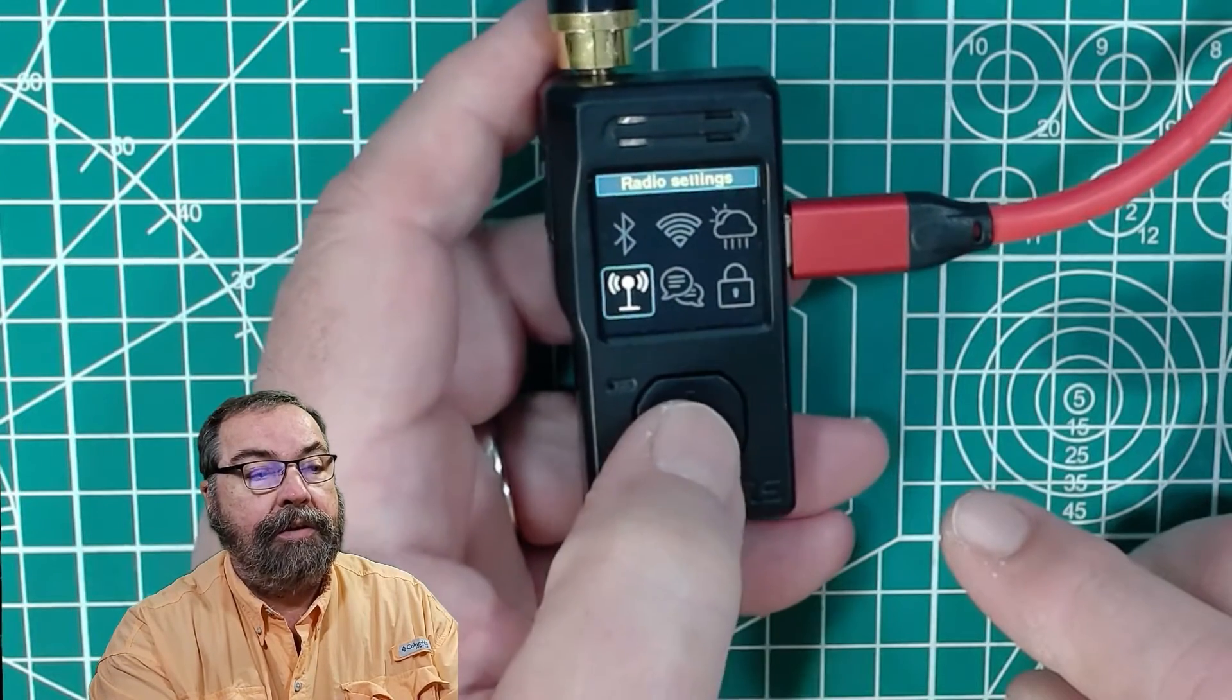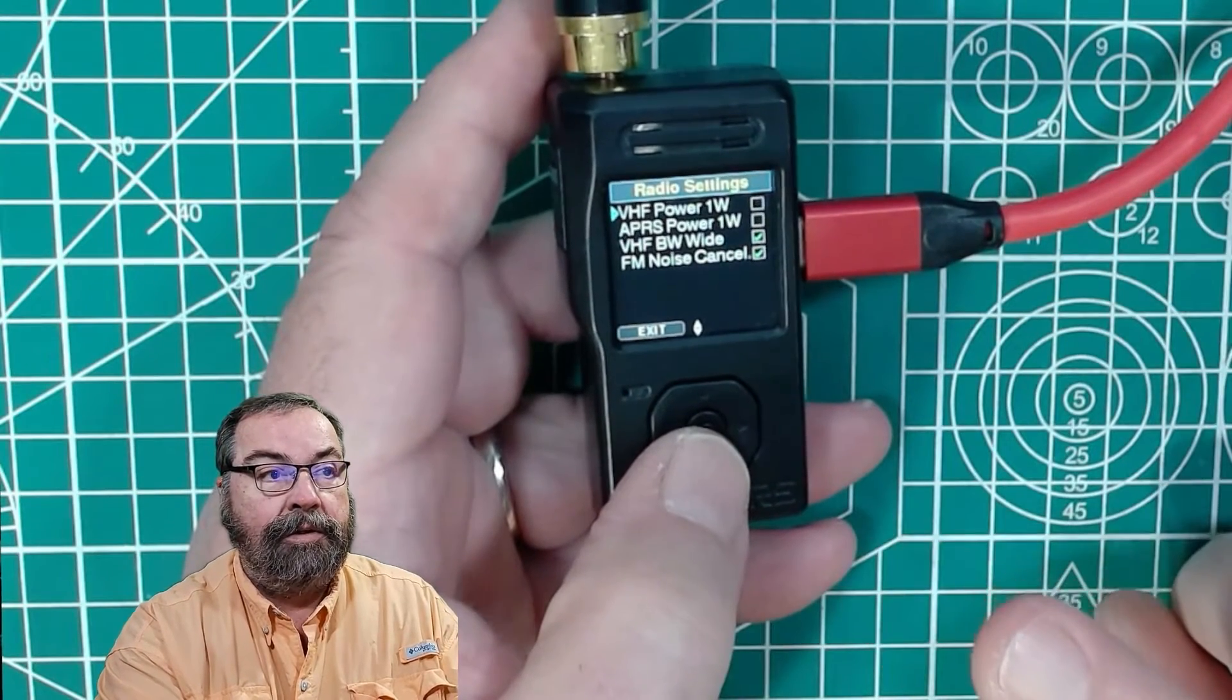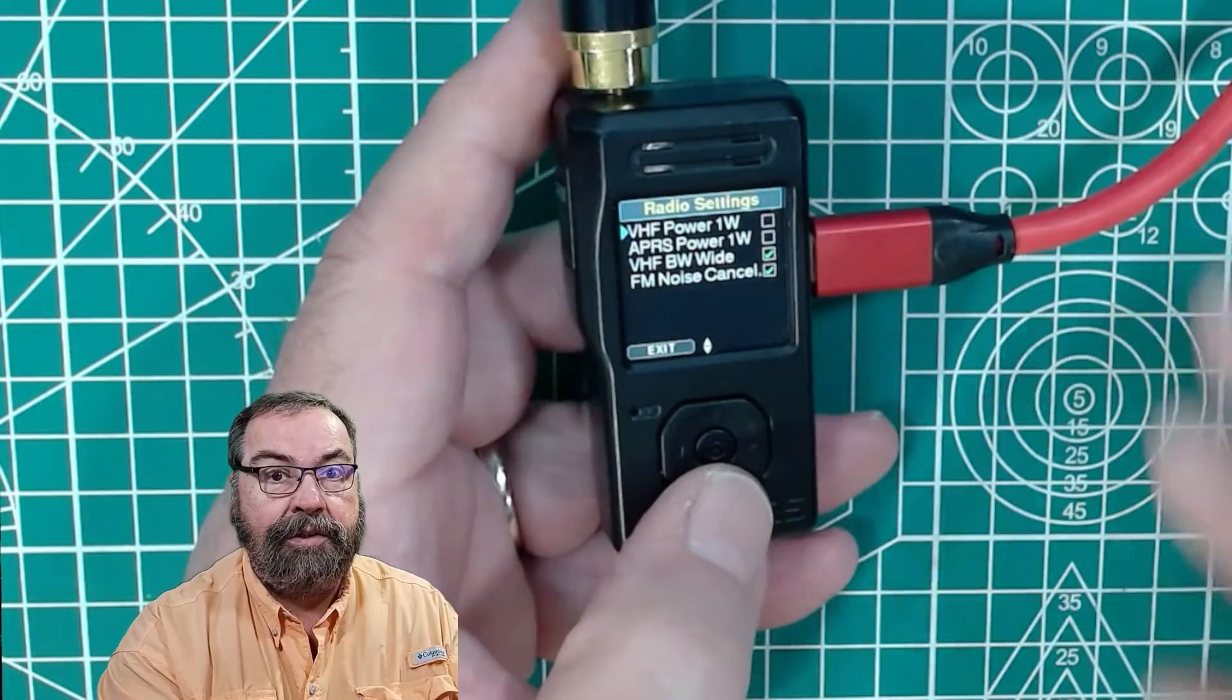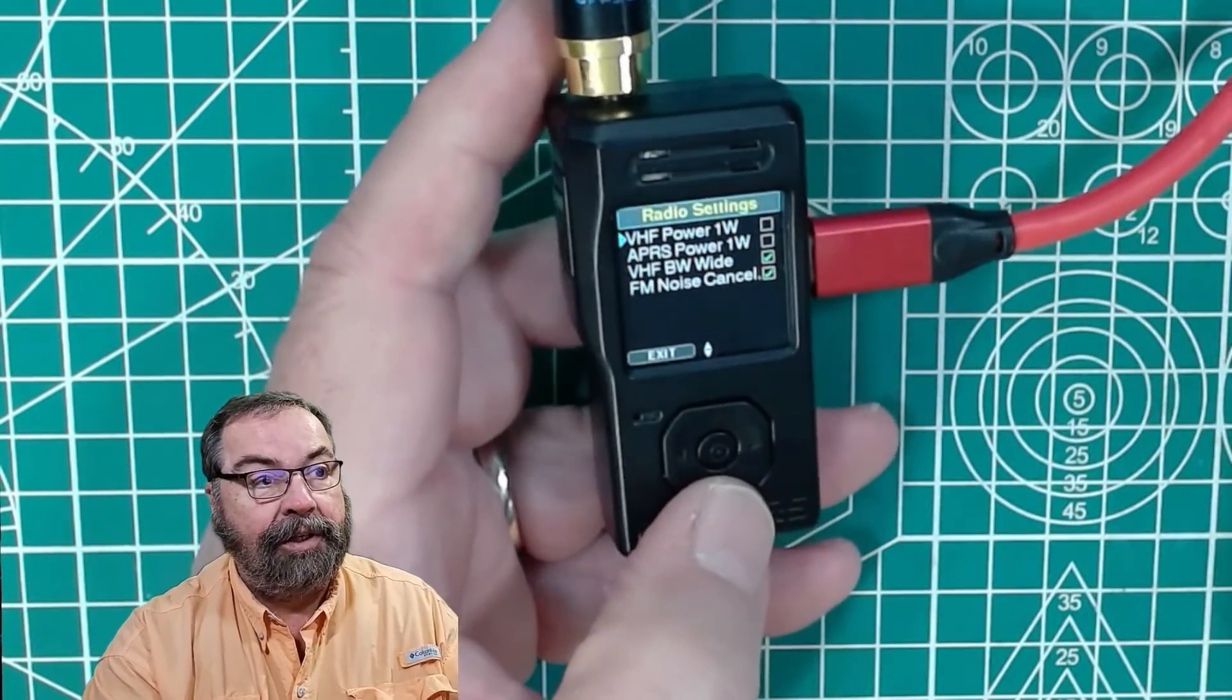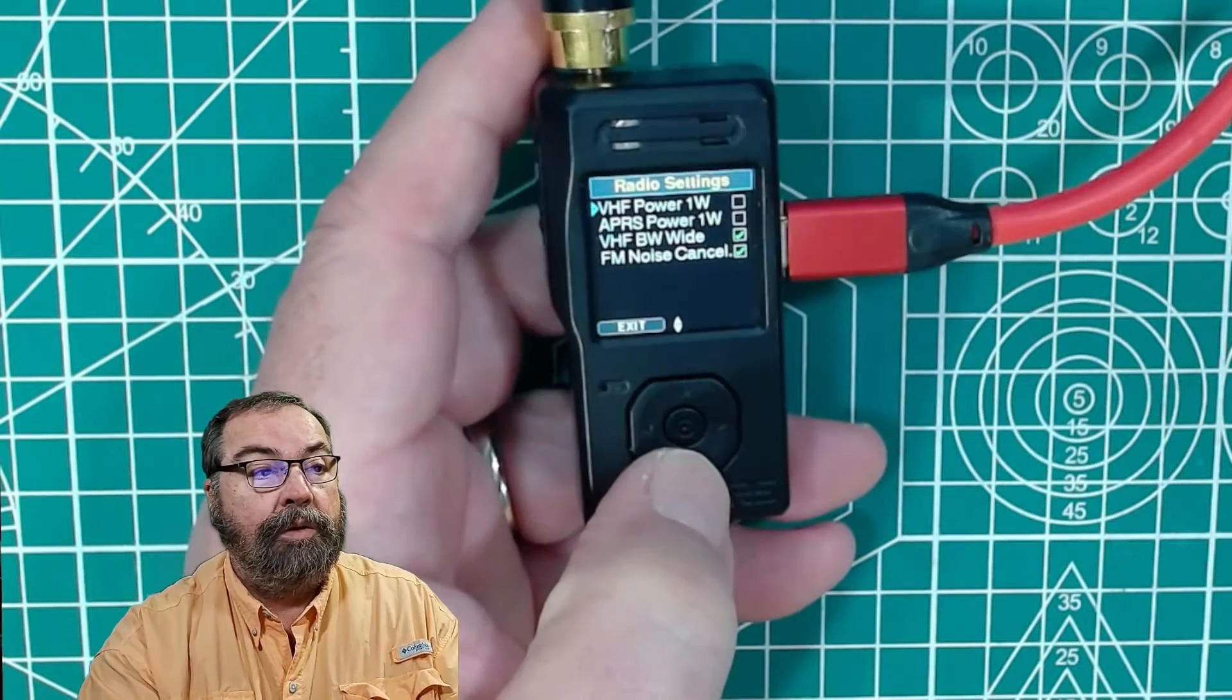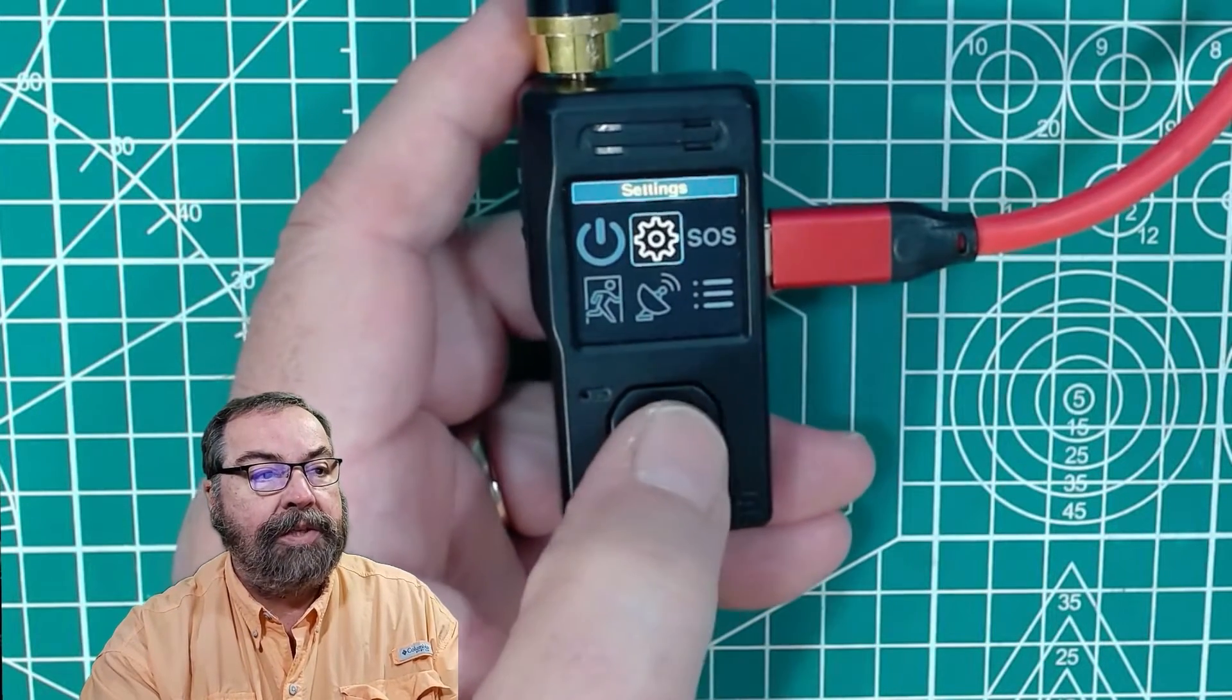And then the last thing here is the actual radio settings. And this is useful because this device will transmit at one watt on VHF or APRS. So you can also set it to half watt, which is what I've got it in now, which obviously is going to extend your battery life. A half a watt with this small antenna, you're not going to get very far with either your APRS transmissions or your VHF regular voice transmissions, but it will save battery. Of course, we can change our bandwidth to narrow or wide and we have FM noise cancellation.